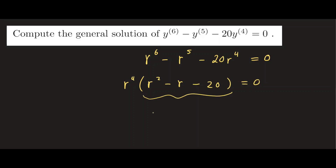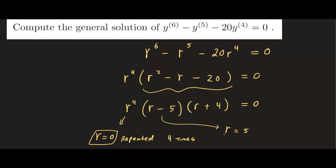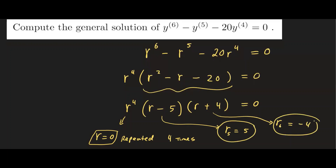We factor r squared minus r minus 20 further into r minus five and r plus four. So we have r to the fourth times r minus five times r plus four equals zero. Setting r to the fourth equal to zero gives r equals zero, but it is repeated four times. Setting r minus five equal to zero gives r five equals five, and setting r plus four equal to zero gives r six equals negative four. So there are six roots total.